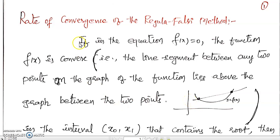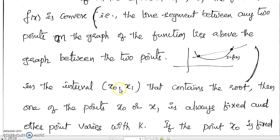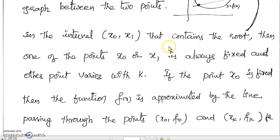Now, what is the condition here? If in the function f(x) = 0, f(x) is convex in the starting interval [x₀, x₁] that contains the root, then one of the points, either x₀ or x₁, is always fixed during interval location. The other point varies with k, where k is the iteration number. Let us assume x₀ is fixed. Then the intervals are [x₀, x₂], [x₀, x₃], [x₀, x₄], and so on.